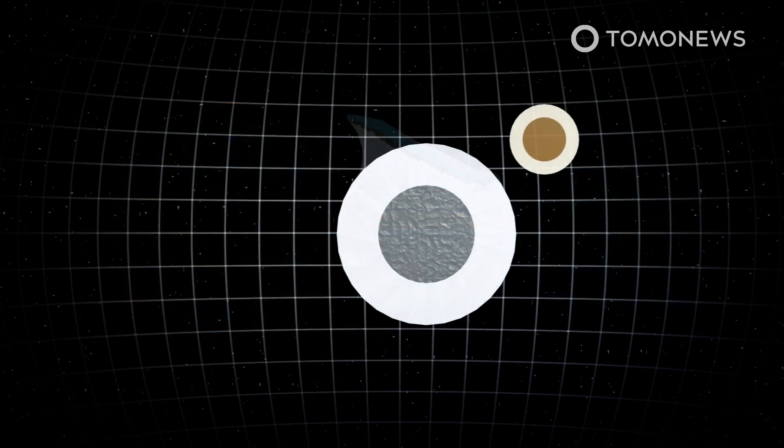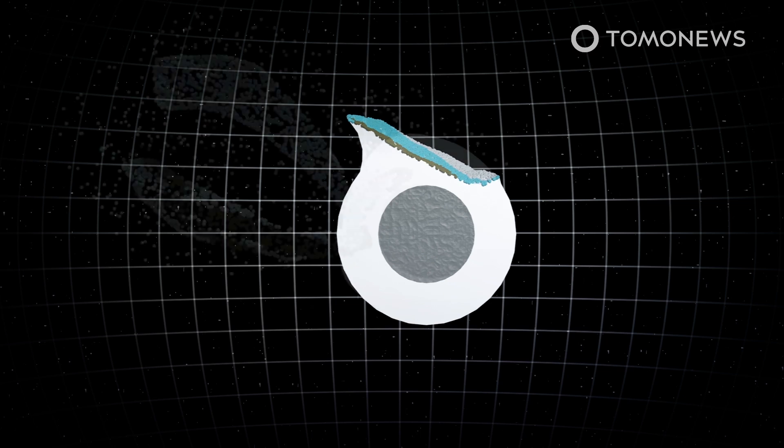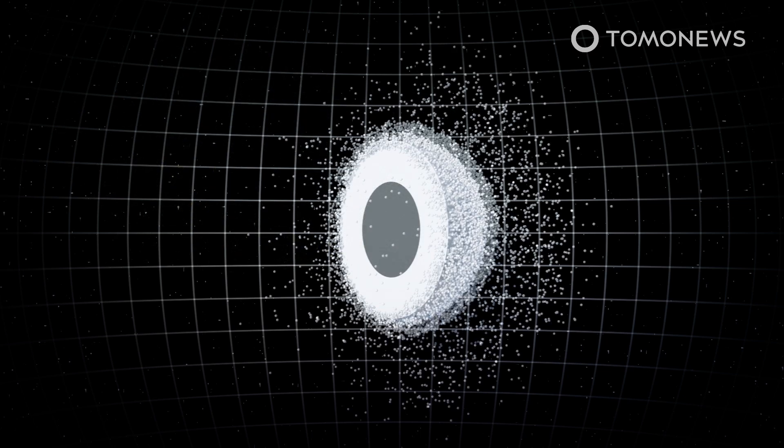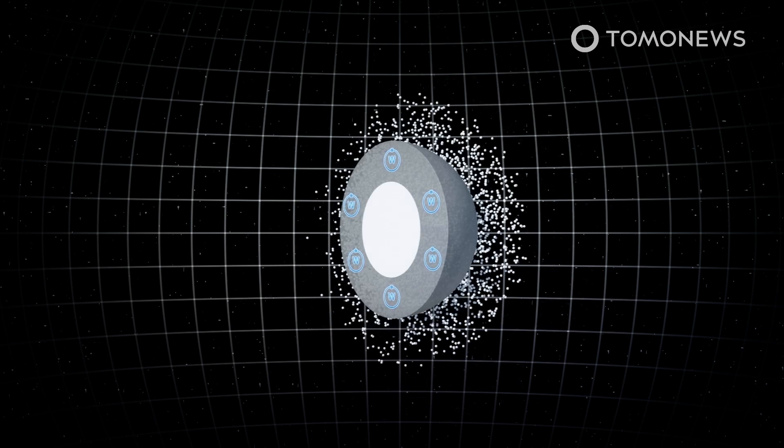However, the Institute's researchers say Mars is known to have experienced large collisions in its early formative history. According to their models, this would have scrambled Mars' mantle and created a heterogeneous marbled structure.